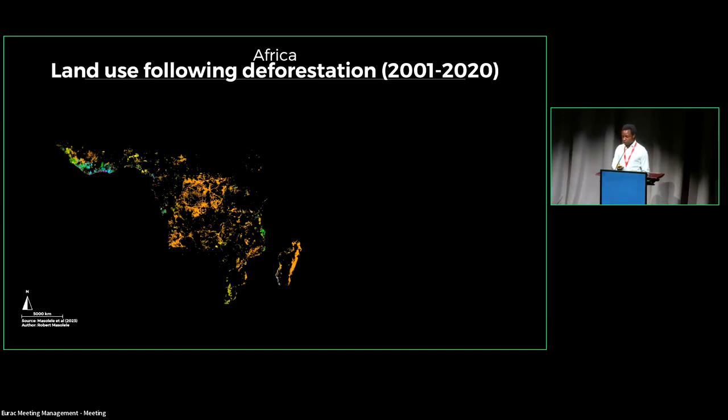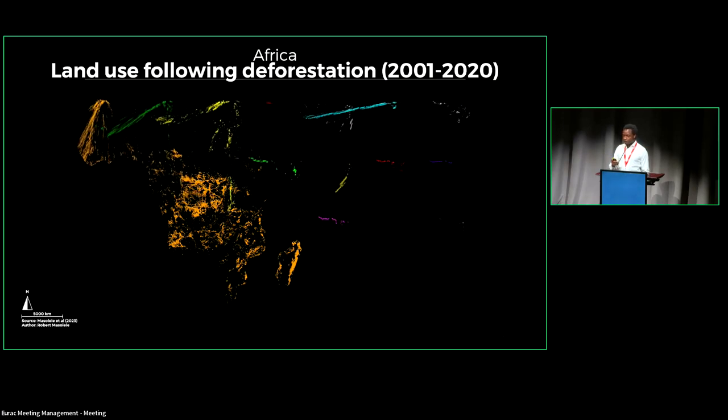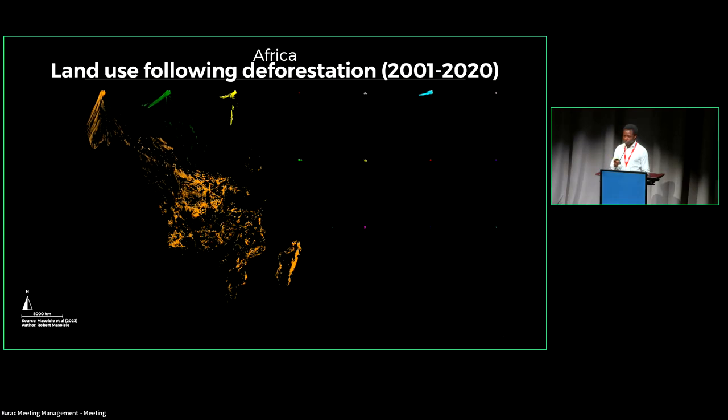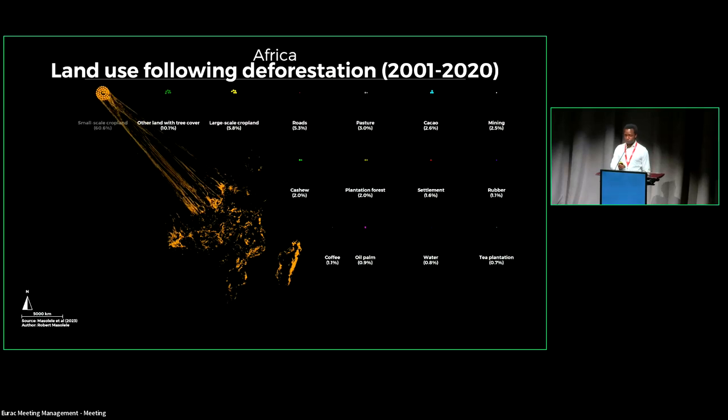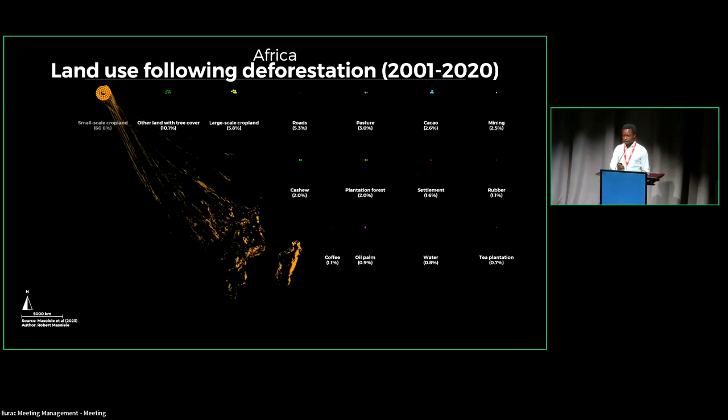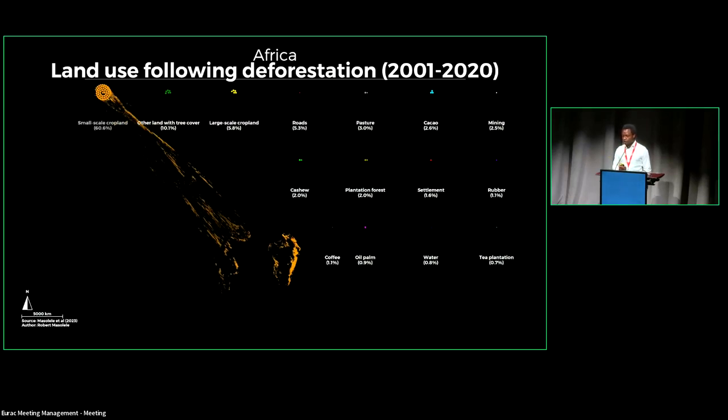Using those data, you can see the pattern. This is showing you where most of the conversion are taking place, but also the percentage of these land use and where they're coming from. You can see mostly the dominance of small scale cropland, but also we have classes for land use conversion which are not associated with any of these land use conversions. Also, you can see pasture, cacao and mining activities. This gives you an impression in terms of what amount of conversion and in what proportion is taking place in these areas.